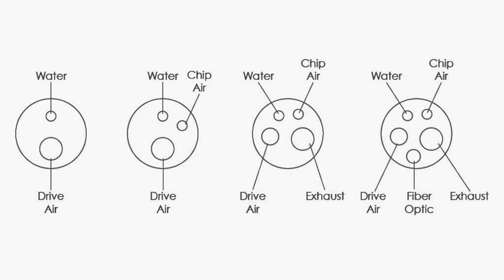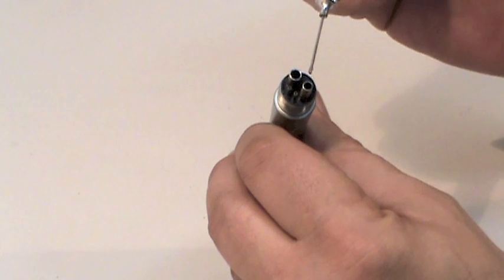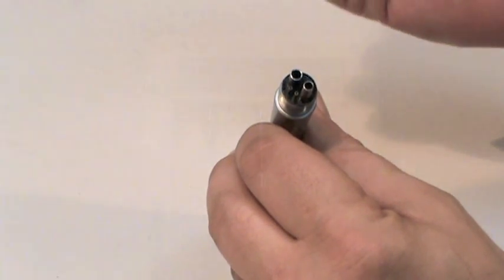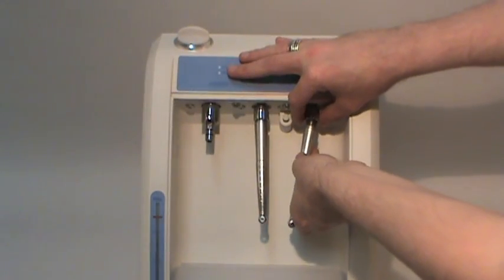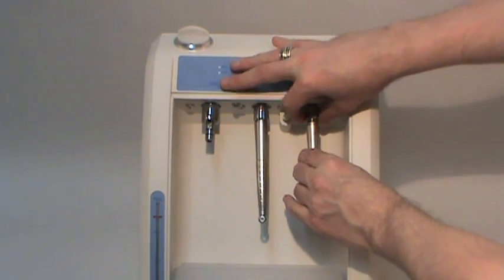Handpiece lubricants and cleaners are only sprayed or dropped into the drive air hole of a handpiece. The exhaust hole does not connect to the turbine. Flush or purge your handpiece after every lubrication and before sterilizing.